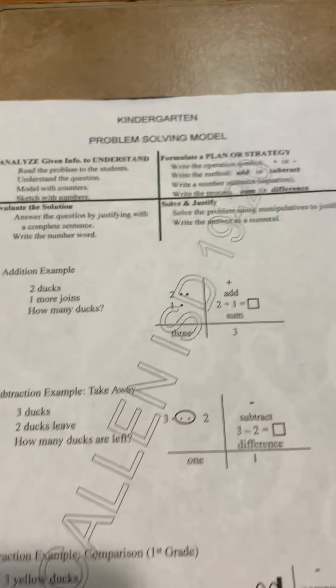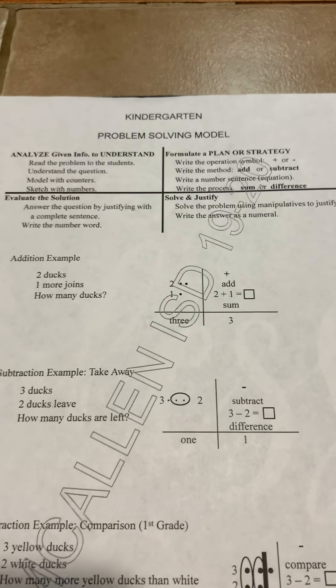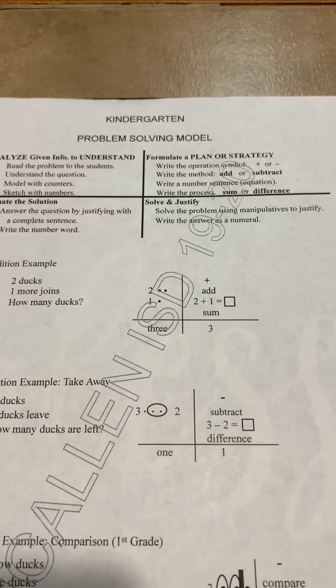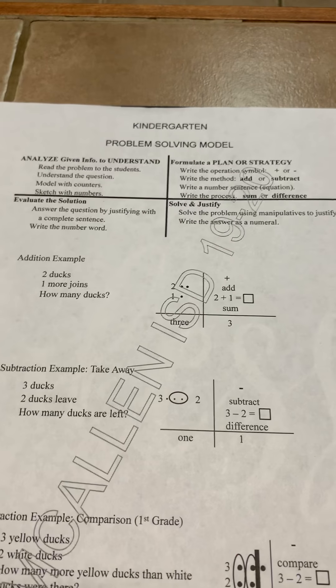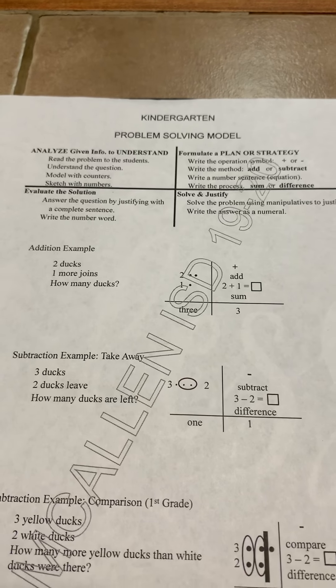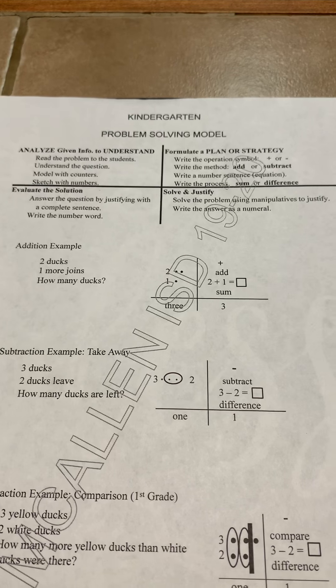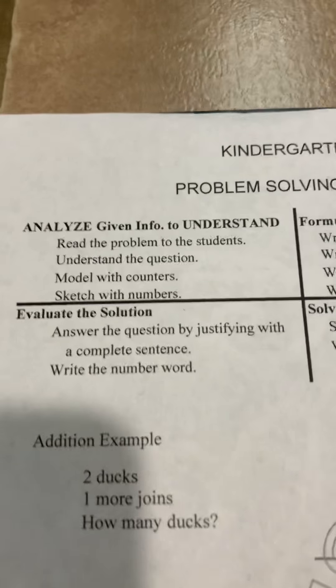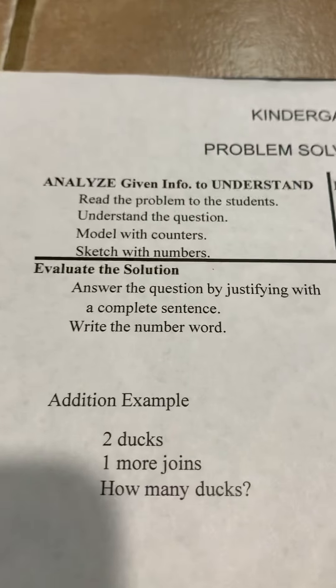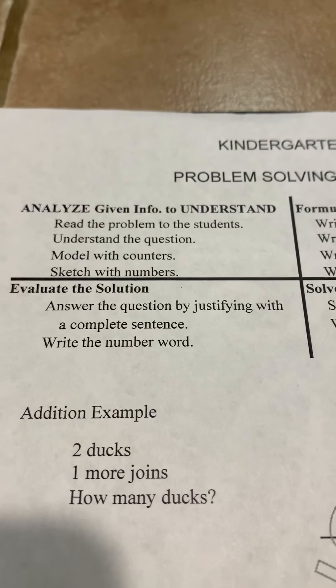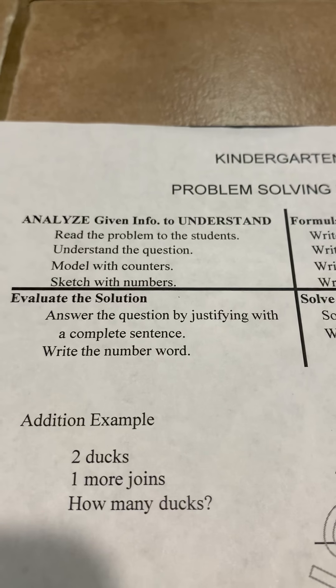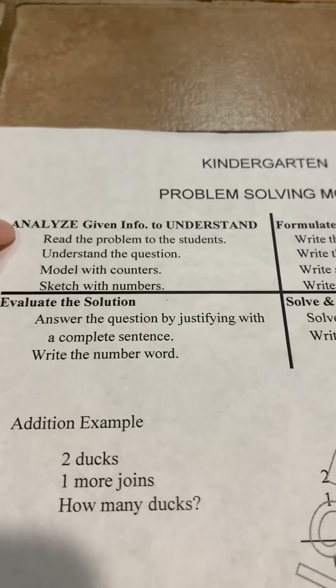This is the kindergarten problem-solving model. We have four steps. First, we analyze — that's the given information to understand. So we read the problem, we understand the question, we model with counters, and we sketch with numbers.